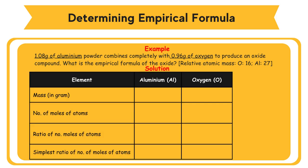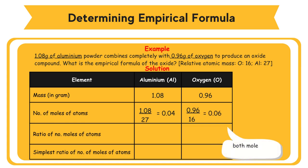Solution. Element: Aluminium (Al) and Oxygen (O). Mass in grams: 1.08 and 0.96. Number of moles of atoms: 1.08 divided by 27 equals 0.04, and 0.96 divided by 16 equals 0.06. Ratio of number of moles of atoms: 0.04.